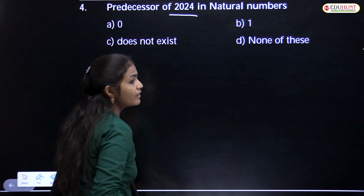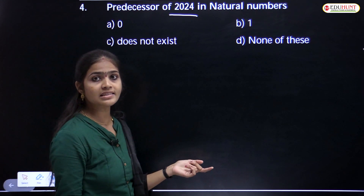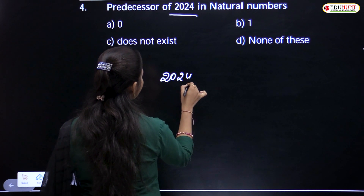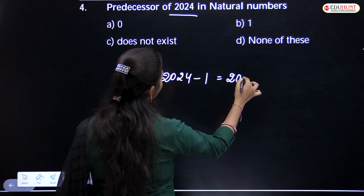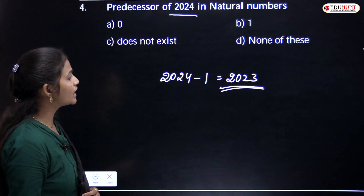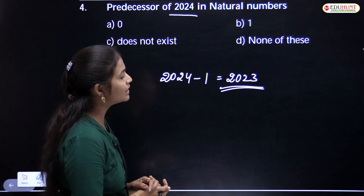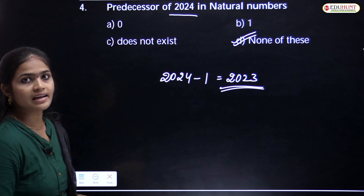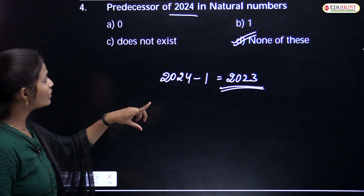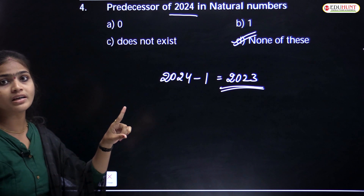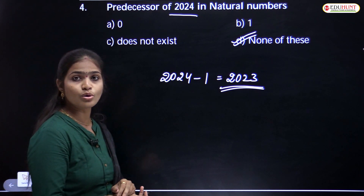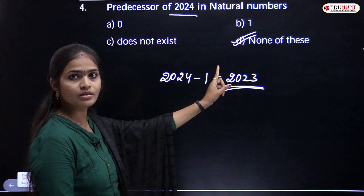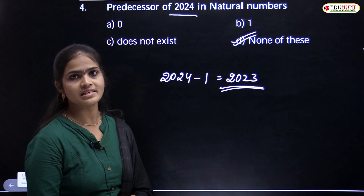Predecessor of 2024 in natural numbers. They are not asking about the predecessor of 1. To find the predecessor, subtract 1 from the given number: 2024 minus 1 equals 2023. So 2023 is the answer. But if 2023 is not listed in the options, then the answer is none of these. Does not exist would apply if they asked for the predecessor of 1 in natural numbers. Here the answer is none of these.